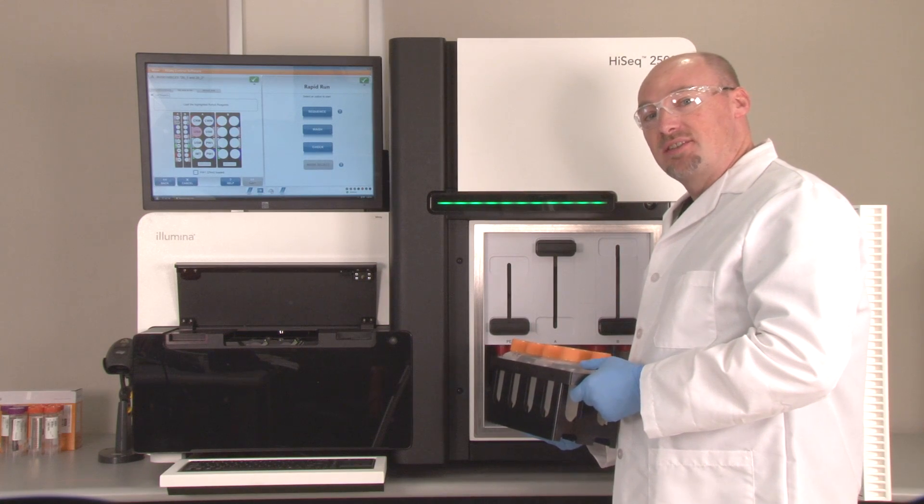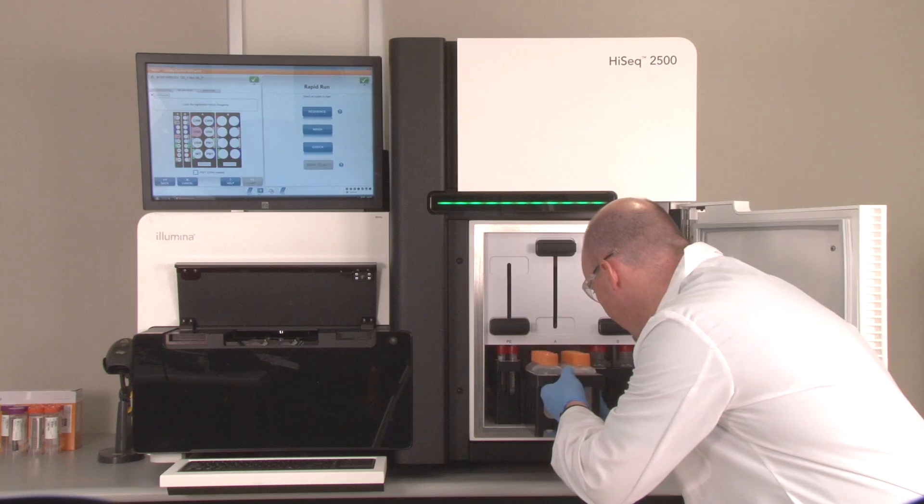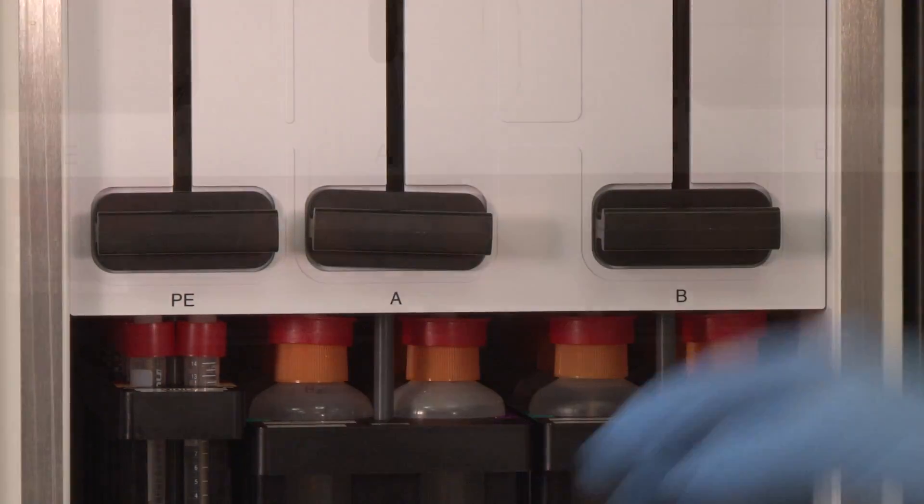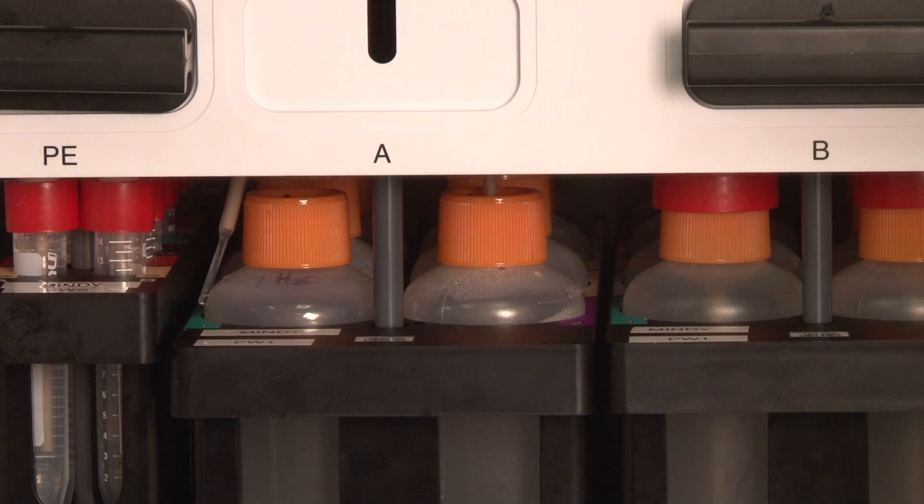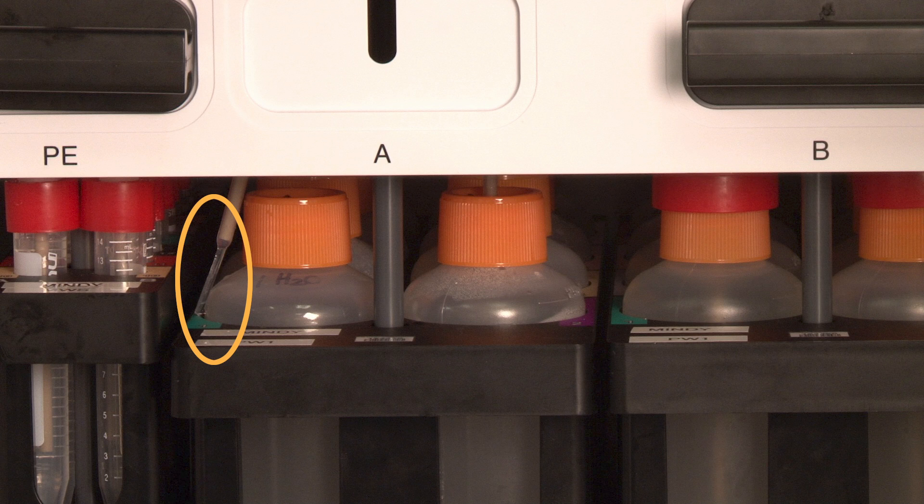When loading reagents into the chiller, make sure to get down to eye level with the reagent rack and monitor the sippers going into the tubes. It is possible for the plastic sipper to get bent and potentially miss the opening of the bottle. This results in pulling air into the lines and run failure due to lack of reagent delivery.